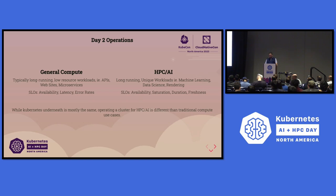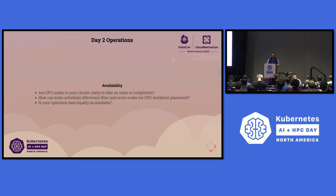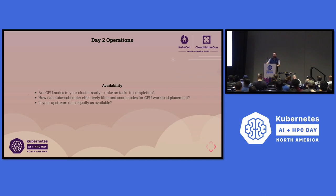Underneath the hood it's largely the same, but how we think of day two operations in HPC AI clusters is vastly different and poses a lot of questions. For example, are your GPU nodes ready to take on tasks to completion? Because of the nature of those workloads, if a task dies in the middle you have to start it all over again. That can add to a lot of performance problems and cleanup if you have intermediary data stores. Also, the kube scheduler can't filter and score nodes for GPU workload placement — it's not scoring off GPU capacity.